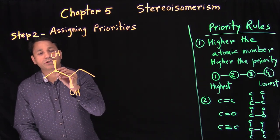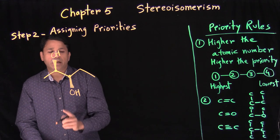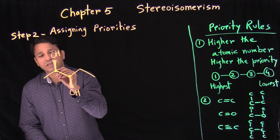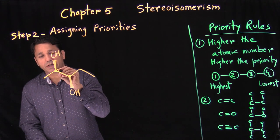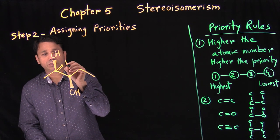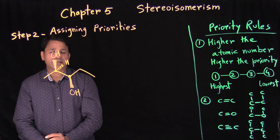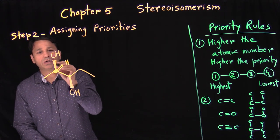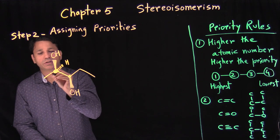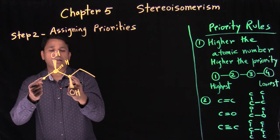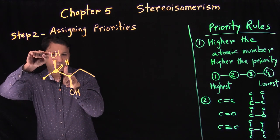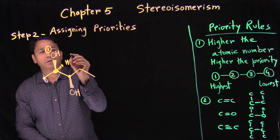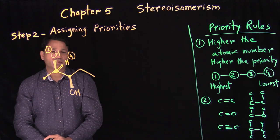We saw previously that there are two stereogenic carbons. When you have more than one, handle one at a time. Looking at this first carbon — the missing hydrogen is there. If you're looking at this carbon, then we have oxygen, hydrogen, a carbon, and a carbon. Oxygen gets number one priority and hydrogen gets number four — that's obvious.